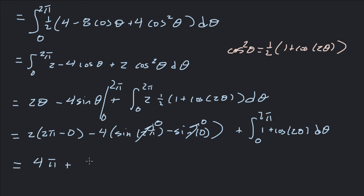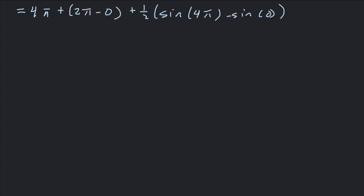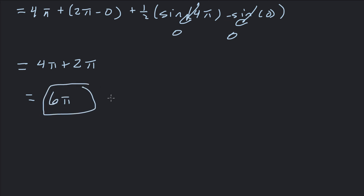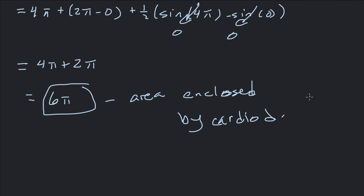Integrating 1 + cos(2θ): integral of 1 is θ, integral of cos(2θ) is ½sin(2θ). Evaluating from 0 to 2π: we get 2π - 0 plus ½sin(4π) - ½sin(0). Since sin(4π) = 0 and sin(0) = 0, the remaining integral equals 2π. So the total area is 4π + 2π = 6π. That is the area enclosed by the cardioid — 6π square units.